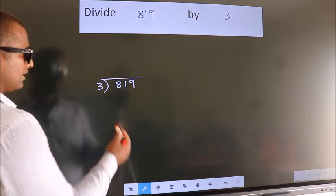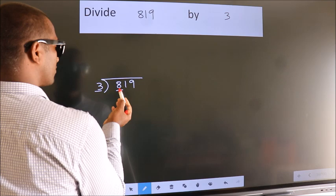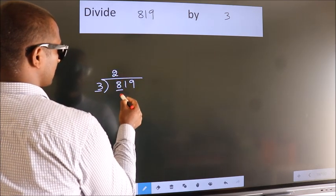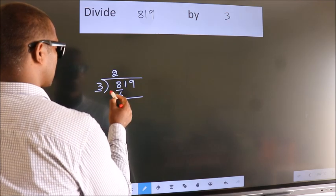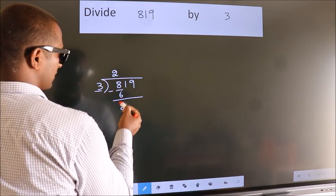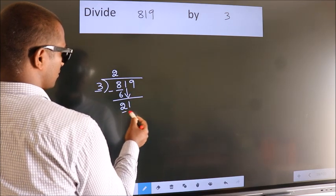Next, here we have 8. Here 3. A number close to 8 in the 3 table is 3 times 2, which is 6. Now we should subtract. We get 2. After this, bring down the beside number. So 1 down. So 21.